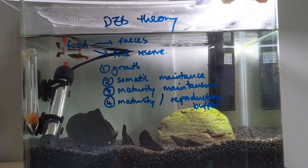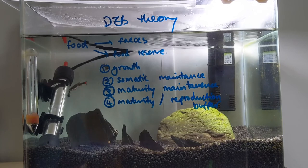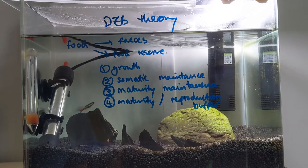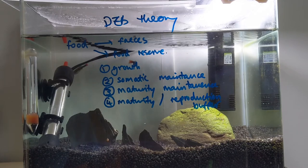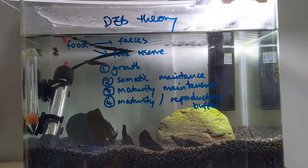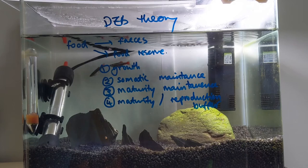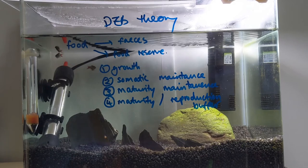This is true for all individuals in the world — it's certainly true for harpacticoid copepods. Dynamic energy budget models attempt to investigate the rates at which energy is assimilated into these areas in different environmental conditions, such as temperature and food availability.